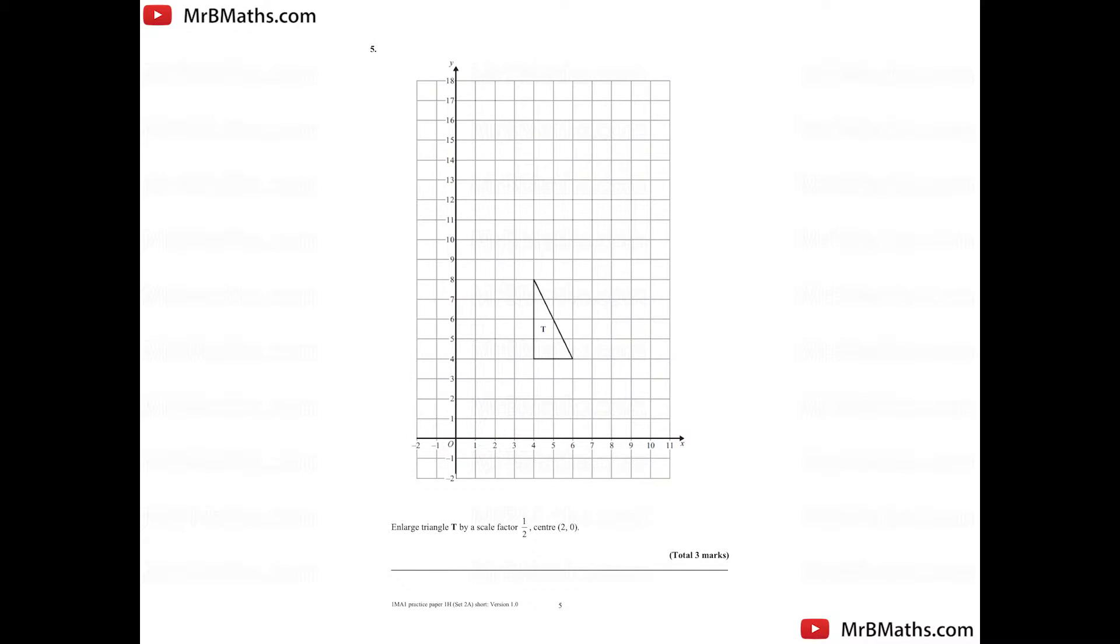Enlarge triangle T by a scale factor of half, center two zero. So a scale factor of half would mean that it's going to decrease in size. And that's because anything less than one would be a decrease. Anything greater than one would be an increase in size.